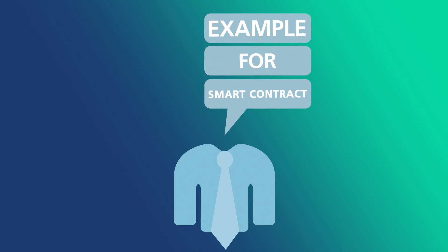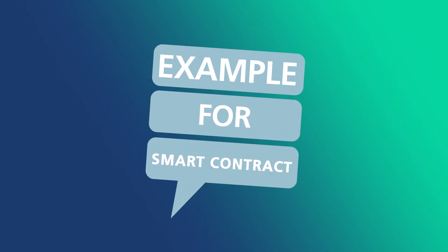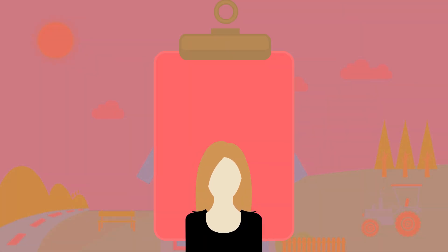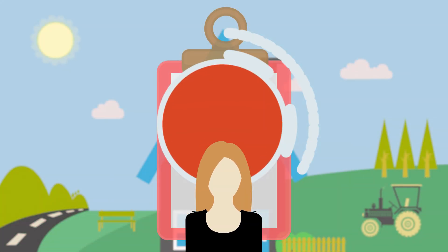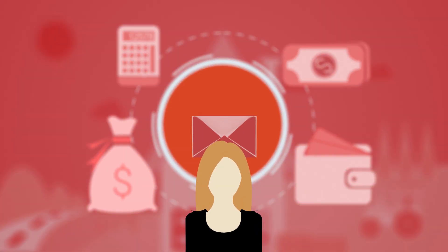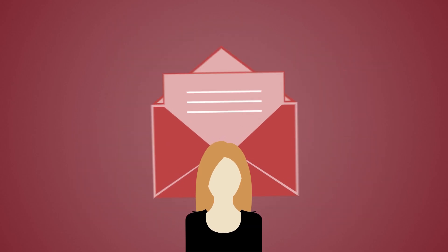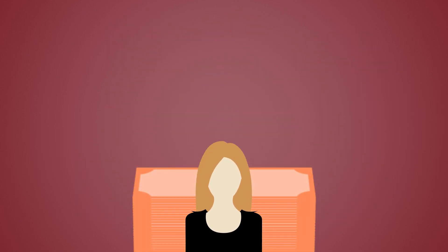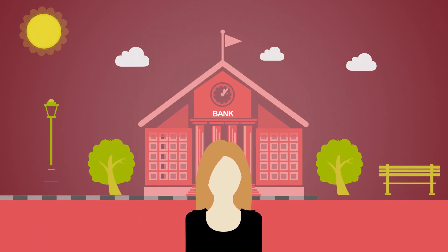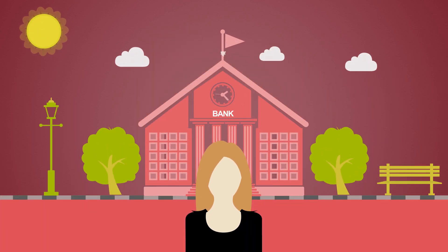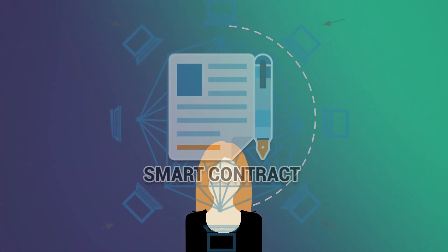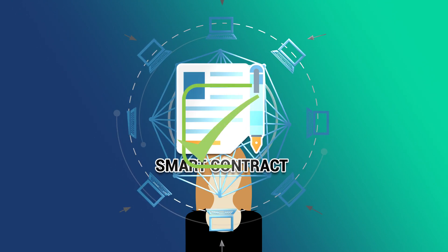Here is an example where a smart contract could replace the current status quo. Jennifer wants to buy a house from Peter. In order to do that, she has to validate and fill out a lot of paperwork, go to the lawyer and validate the undisputed ownership of the house, and review and fill out additional corresponding documents. Since Jennifer does not have enough capital of her own, she also needs a mortgage to finance the house. Therefore, she has to go to a bank which requires additional paperwork and a comprehensive background check. These different steps can be streamlined and optimised with a smart contract.